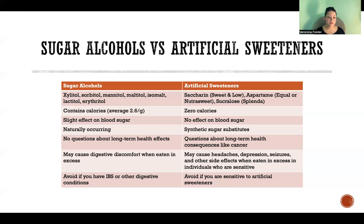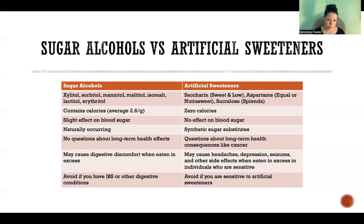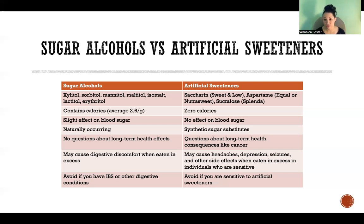Sugar alcohols have a slight effect on blood sugar, which I also went through in my previous video, whereas artificial sweeteners do not affect blood sugar. Sugar alcohols are naturally occurring in certain fruits and vegetables, whereas artificial sweeteners are synthetic sugar substitutes that are developed in a lab.